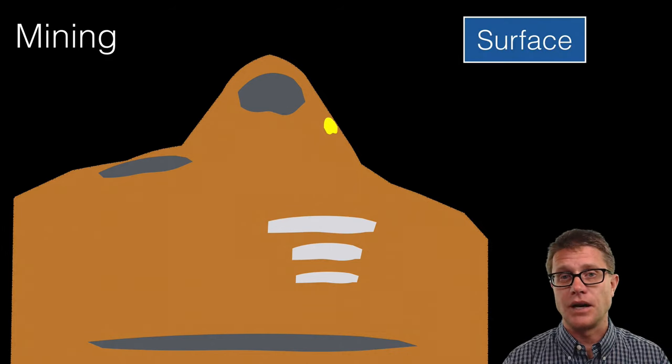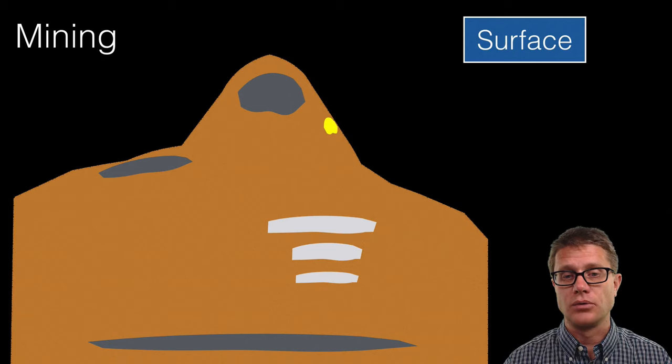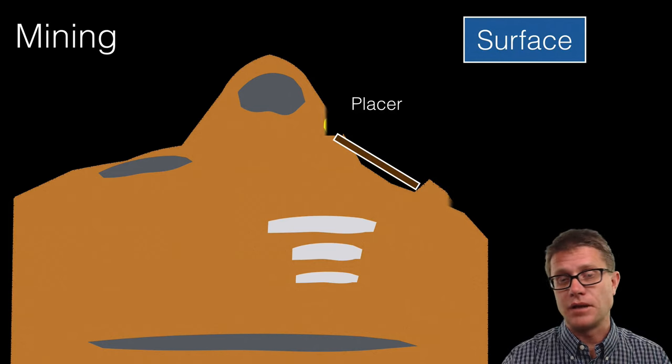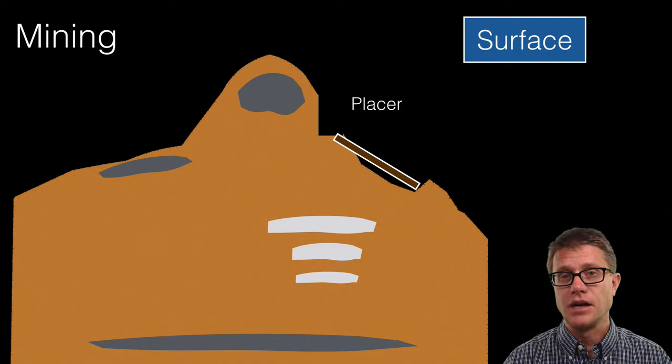Well we could do what is called a surface mine. So that is what they are doing during a lot of that gold rush. You have these big troughs. We have a placer mine where we dig the ore out. And then we use water to rinse it off. And then we have got the tailings that are left at the end.